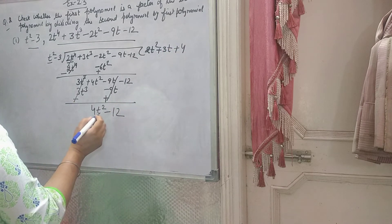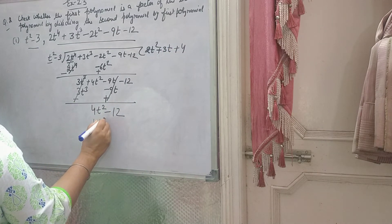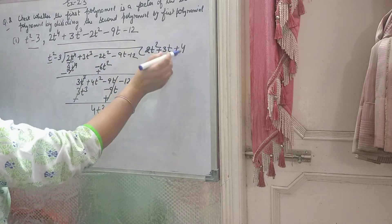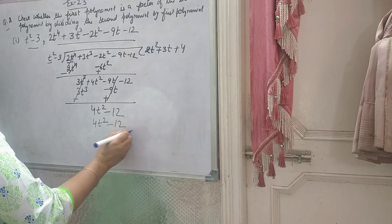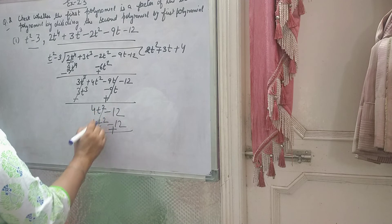Now 4t², multiply t² by 4 to get 4t². Minus 3 multiplied by 4 gives minus 12. Again, change sign and it will cancel. Remainder is 0.